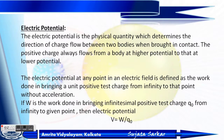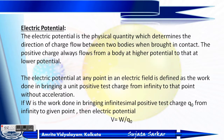The positive charge always flows from a body at the higher potential to the lower potential. So it flows from higher potential to the lower potential. The electric potential at any point in an electric field is defined as the work done in bringing a unit positive charge from infinity to that point without acceleration.